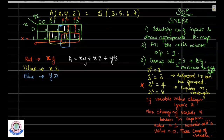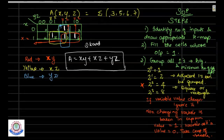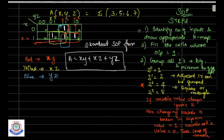The overall expression is: A equals XY plus XZ plus YZ. For the same problem, we are obtaining the expression in standard SOP form. This is the expression generated using K-map simplification.